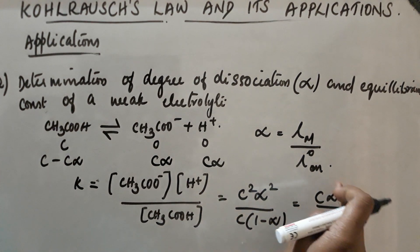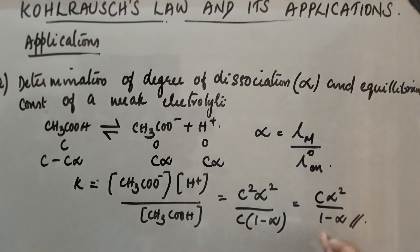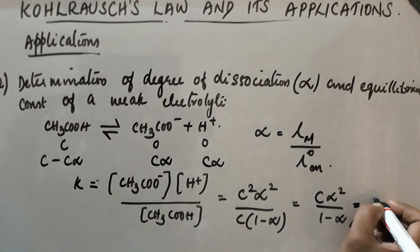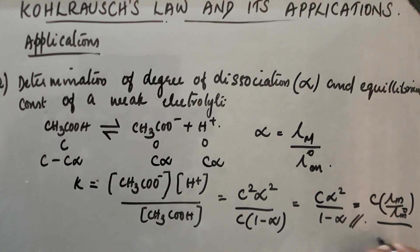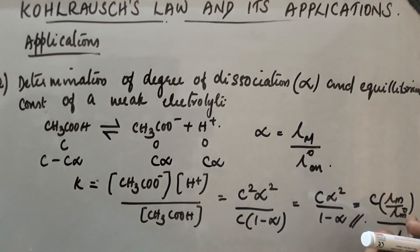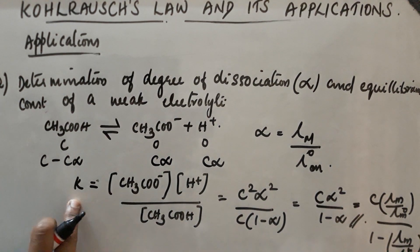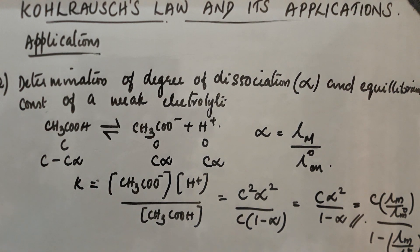Since α = λ_M / λ°, we substitute into the expression for K. So K = C(λ_M/λ°)² / (1 − λ_M/λ°). If we know λ_M and λ°, we can calculate the equilibrium constant. These are the different applications of Kohlrausch's Law.